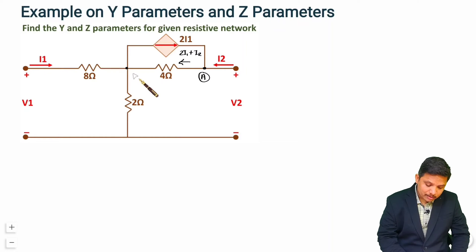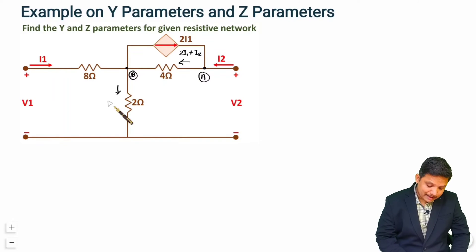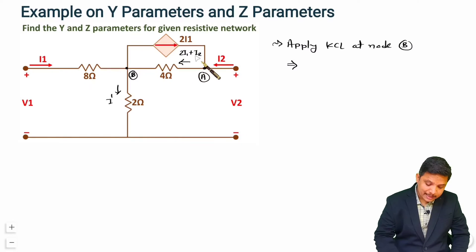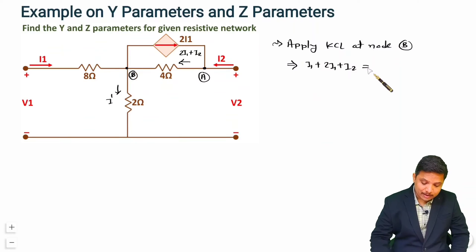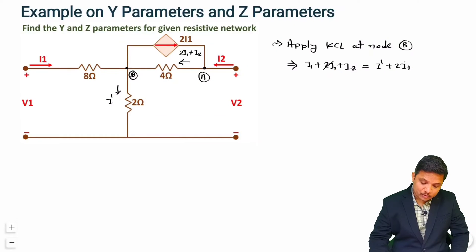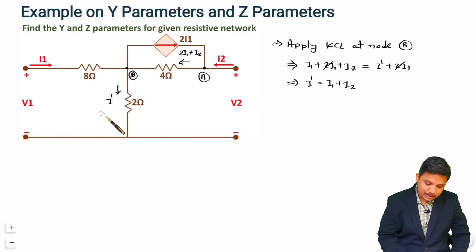Now consider node B. Applying KCL at node B: entering currents are i1 and 2i1 plus i2, and leaving currents are i-dash and 2i1. The 2i1 terms cancel, so i-dash equals i1 plus i2. Therefore, the current in this branch is i1 plus i2, and we now have the current values for each branch in terms of i1 and i2.